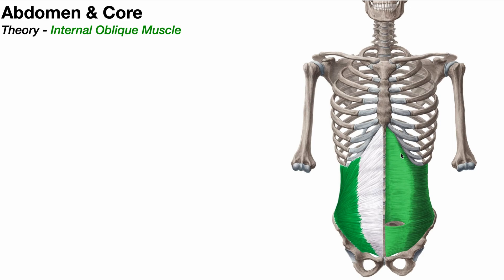In the center here in a lighter green is the aponeurosis of the transversus abdominus. Right here is the arcuate line. Above the arcuate line we have both an anterior and posterior rectus sheath — this would be the posterior rectus sheath, while the anterior would be in front of the rectus abdominus. Below the arcuate line we have just a rectus sheath which lies anterior to the rectus abdominus muscle.